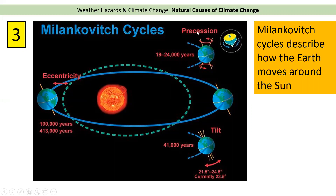The second Milankovitch cycle is called precession. The best way to think about it is like a spinning top — it spins for a while and then starts to wobble. The Earth does the same thing, wobbling slightly roughly every 19,000 to 24,000 years. If it's leaning towards the sun it gets more heat; if it leans away from the sun it gets less heat.